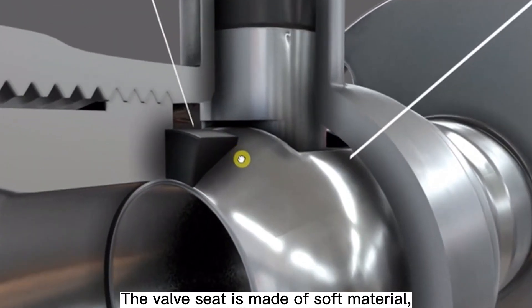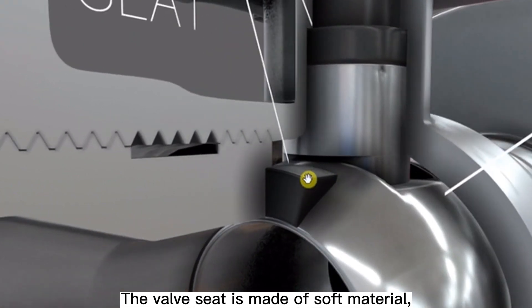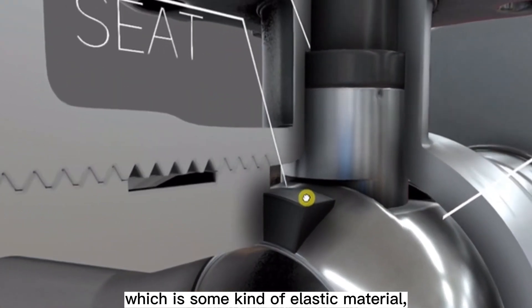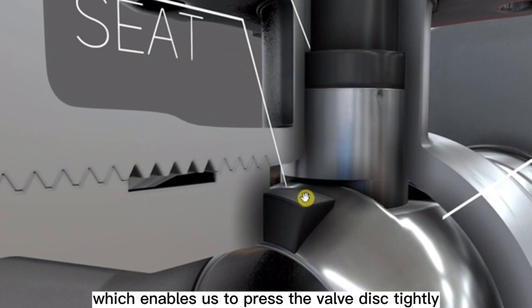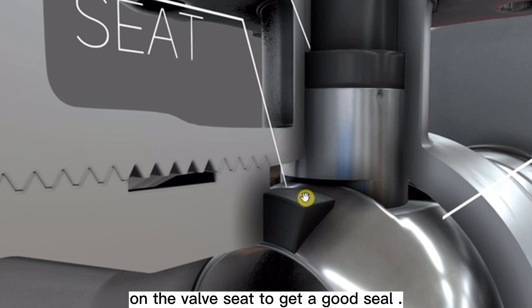The valve seat is made of soft material, which is some kind of elastic material, such as neoprene or hard rubber material, which enables us to press the valve disc tightly on the valve seat to get a good seal.